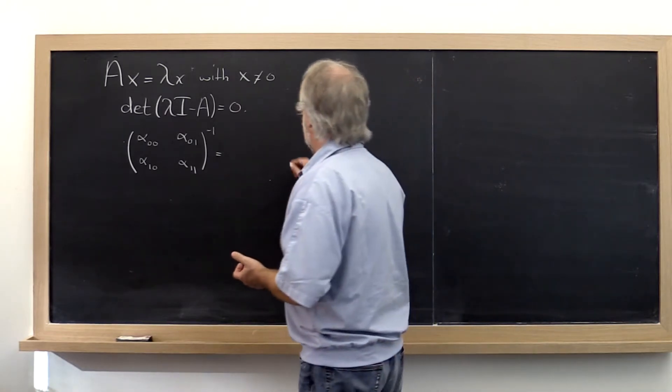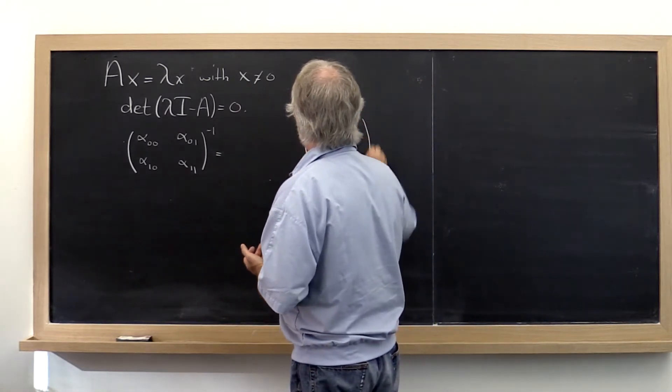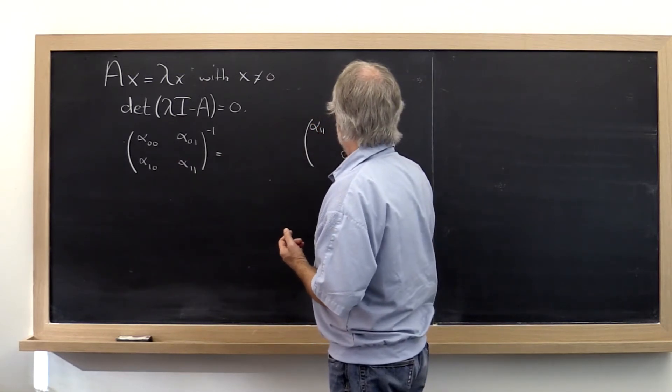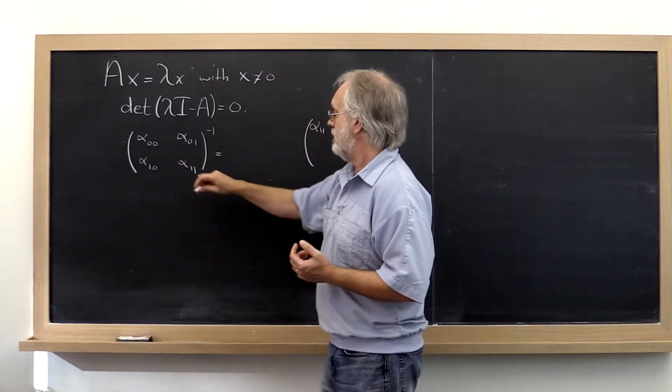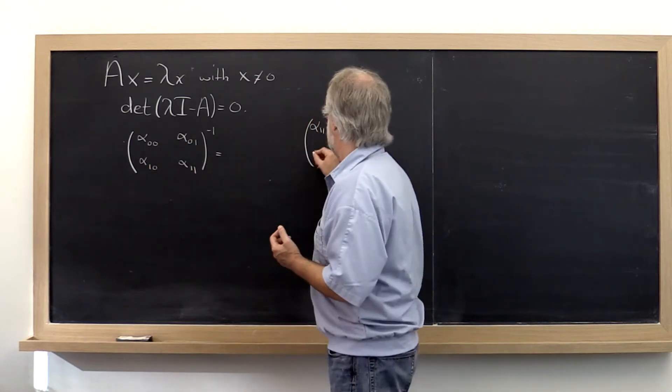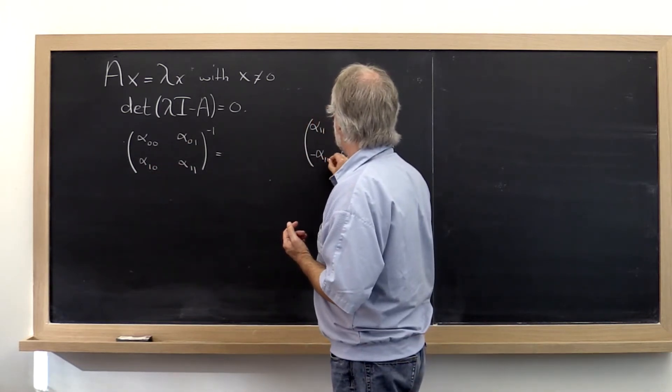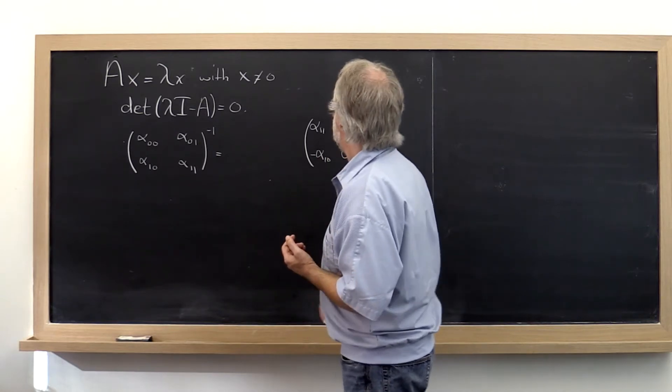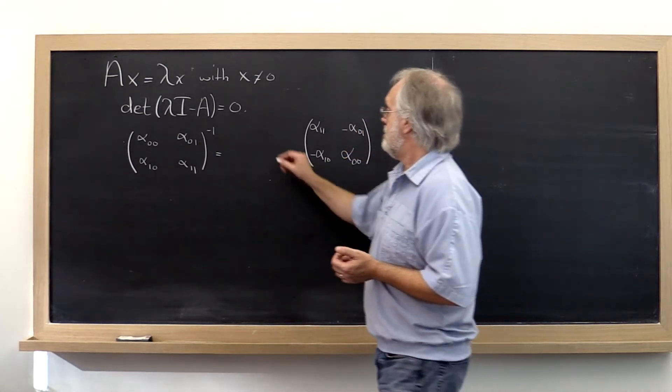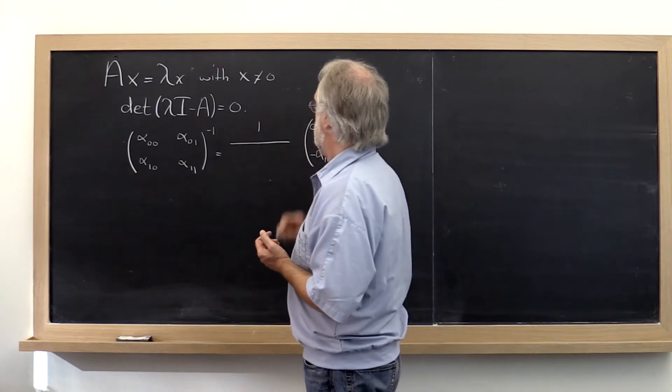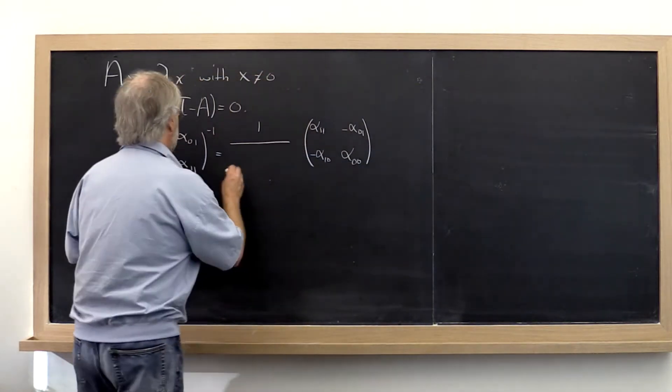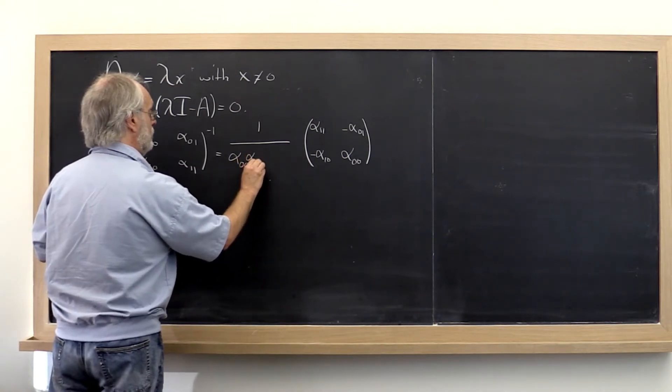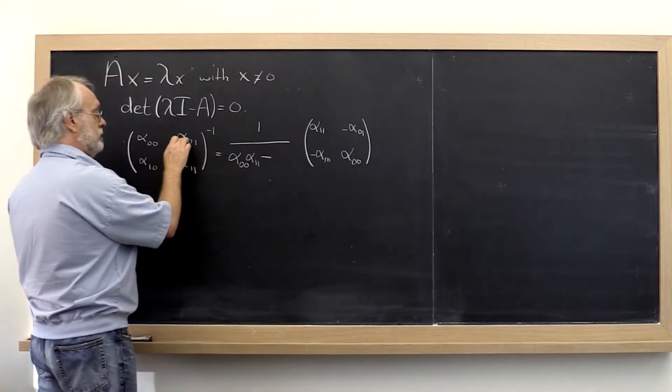And what's the formula? The formula is swap these two entries, alpha 1,1 and alpha 0,0, and then negate these two entries, minus alpha 1,0 and minus alpha 0,1. And then you need to multiply that by this times that, minus this times that.